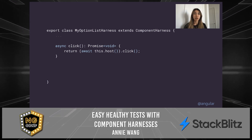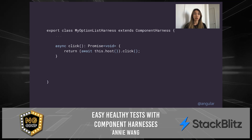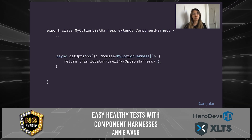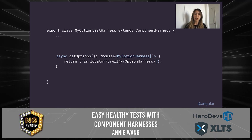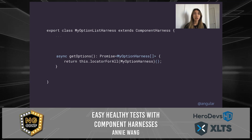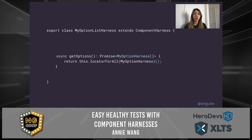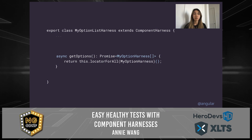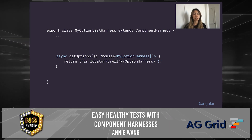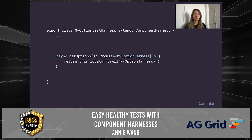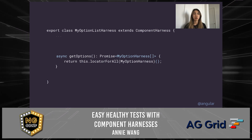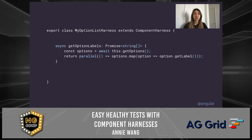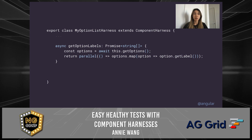Note that we're not interacting with the real DOM element because this wouldn't work across different platforms. Not only can we interact with the host component, we can also get harnesses of subcomponents. For example, to get the options of your option list, you would use the locatorForAll method to locate all instances of option harnesses under your option list. This is similar to querySelectorAll except we're looking for instances of component harnesses, not DOM elements — because interacting with the DOM won't work across different platforms.